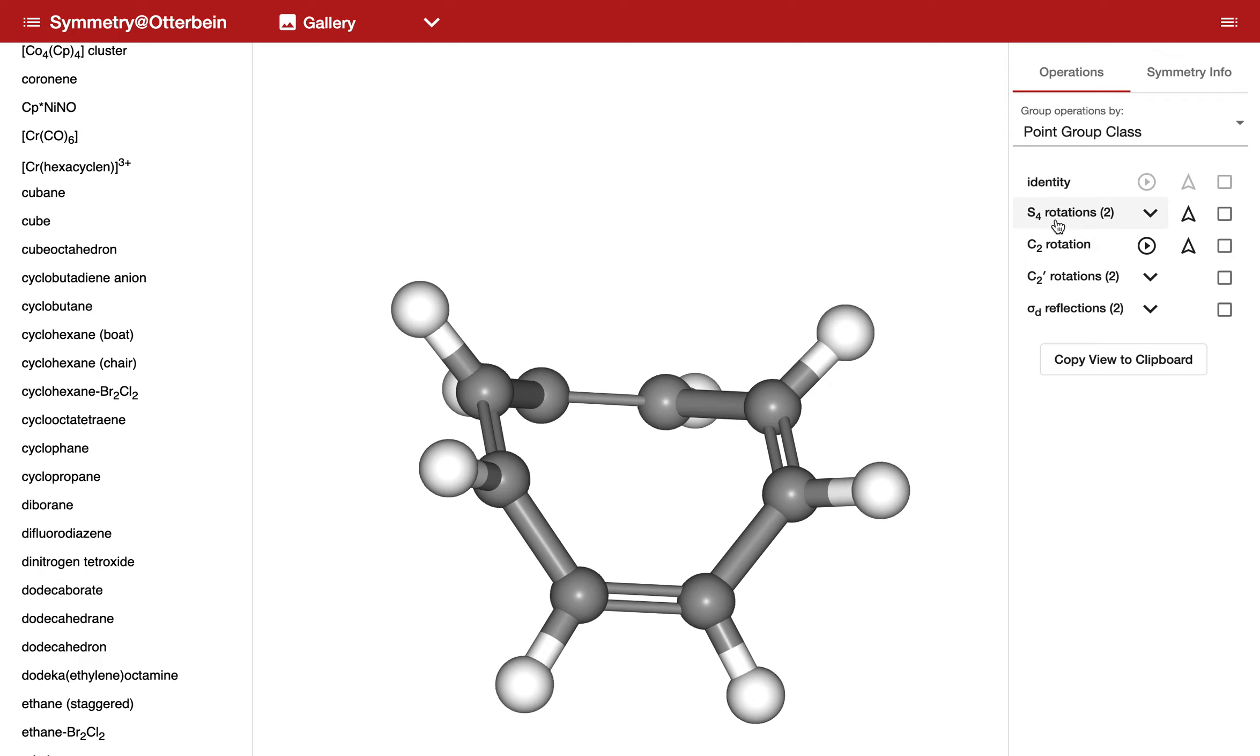There's an S4, an improper rotation axis, a proper rotation axis, two other proper rotation axes, and a sigma reflection plane. So if I look at the C2 rotation, let's look at this one.